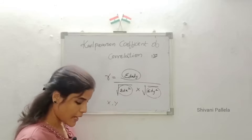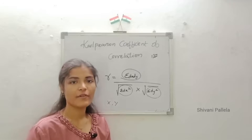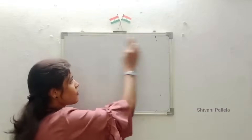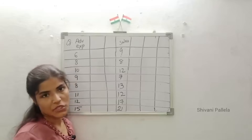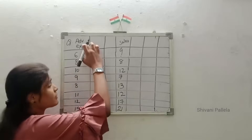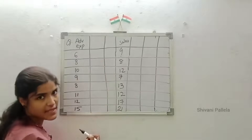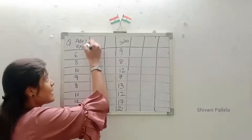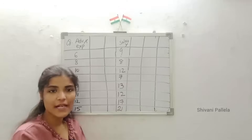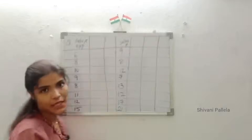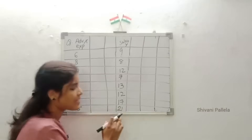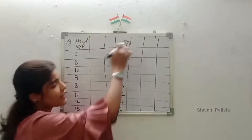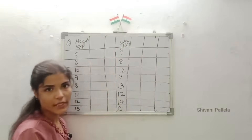Now we will look into a previous year exam question for clarity. In the examination, the question paper will give data such as advertisement expenses and sales. We should consider advertisement expenses as X and sales as Y. Sometimes they will give X and Y values directly; sometimes they give names like marks in accounts and marks in statistics.